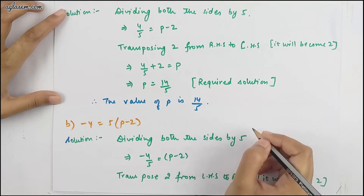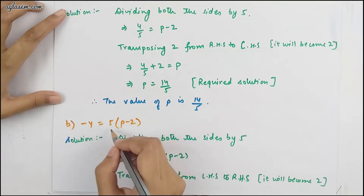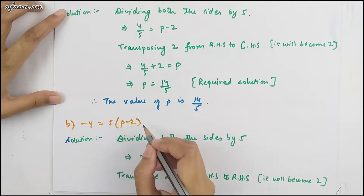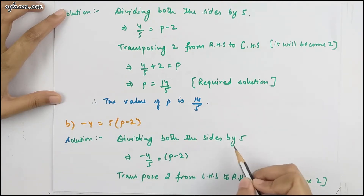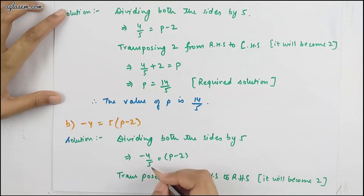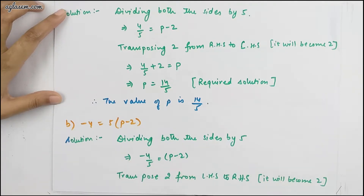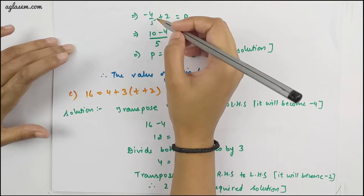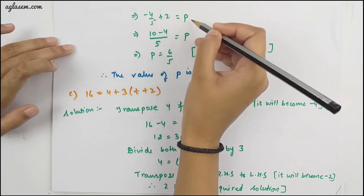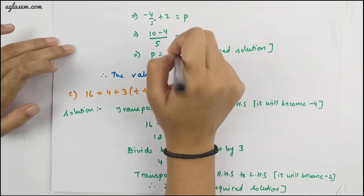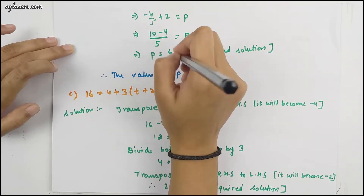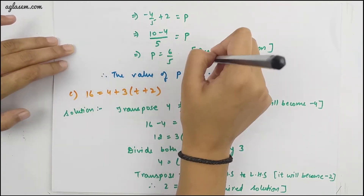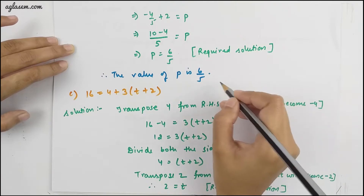The B part is −4 = 5(p − 2). Dividing both sides by 5, we have −4/5 = p − 2. Transposing 2 from RHS to LHS, −4/5 + 2 = p. From there, the value of p = 6/5. Therefore the value of p is 6/5.